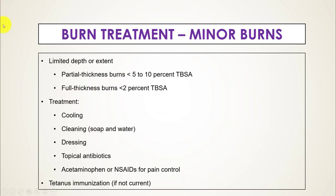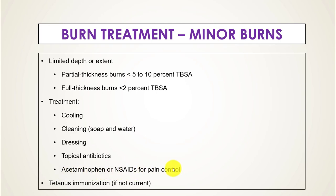Minor burns include superficial burns, partial thickness burns involving a very small percentage of total body surface area, or even full thickness burns involving a tiny percentage. Treatment for minor burns is to cool the skin, clean it with soap and water, apply a dressing with topical antibiotics, and use acetaminophen or NSAIDs for pain control. Most burn patients also receive a tetanus immunization if their tetanus status is not up to date, because there is a small chance of acquiring tetanus after a burn.